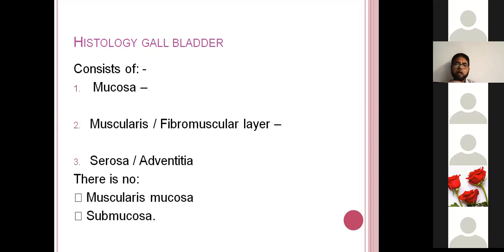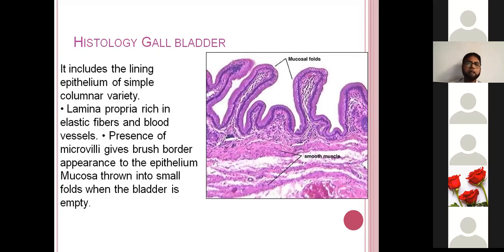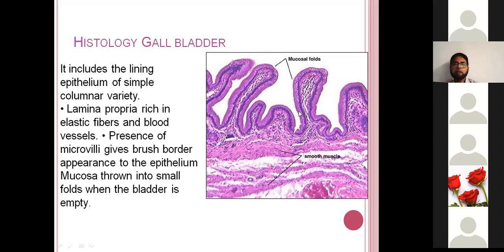The gallbladder consists of mucosa. All layers of mucosa may be listed, but note that muscularis mucosae is absent. The important point is that the gallbladder mucosa is thrown into folds — mucosal folds. These mucosal folds are lined by columnar epithelium. The epithelium shows microvilli. The typical example of simple columnar epithelium is the gallbladder, which has only simple columnar epithelium with microvilli.